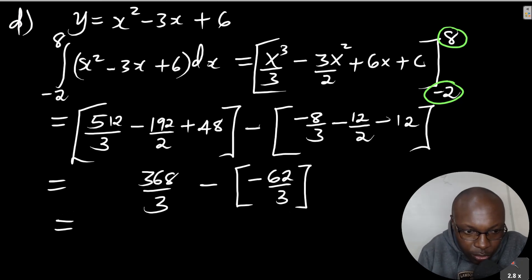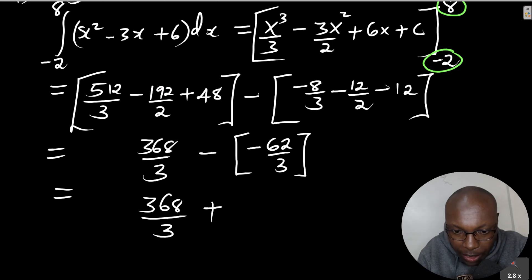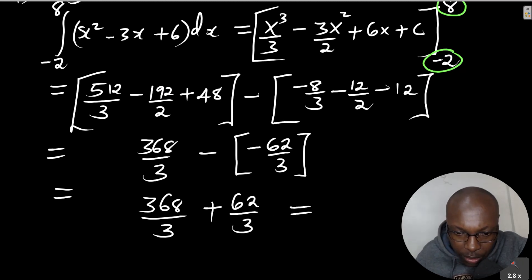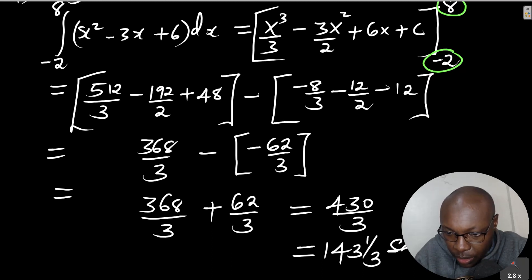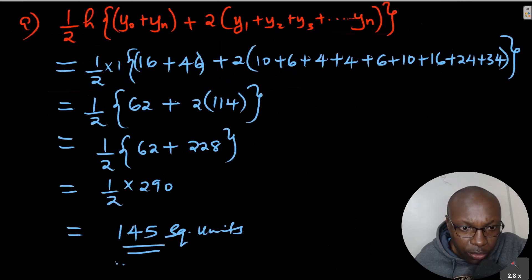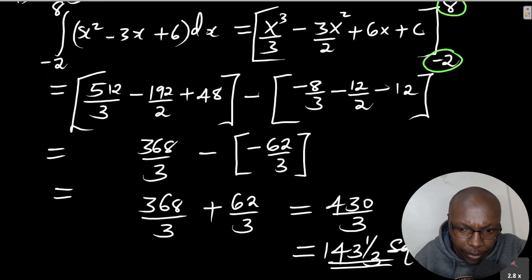430/3 = 143⅓ square units. So, using the trapezium rule we got 145 square units, the mid-ordinate rule gave 140 square units, and integration gives the actual area of 143⅓ square units. That is how you solve this question. Thank you.